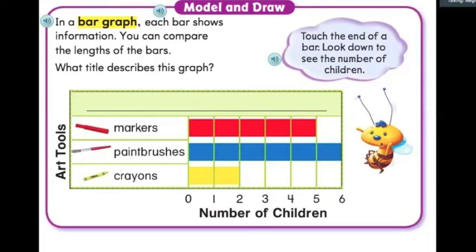What is a title that describes this graph? Well, when I look at the categories, I see markers, paint brushes, and crayons. And those are the art tools. Well, who are using the art tools? And at the bottom, I see the number line that shows us the number of children. So, I know that children are the ones using the art tools.